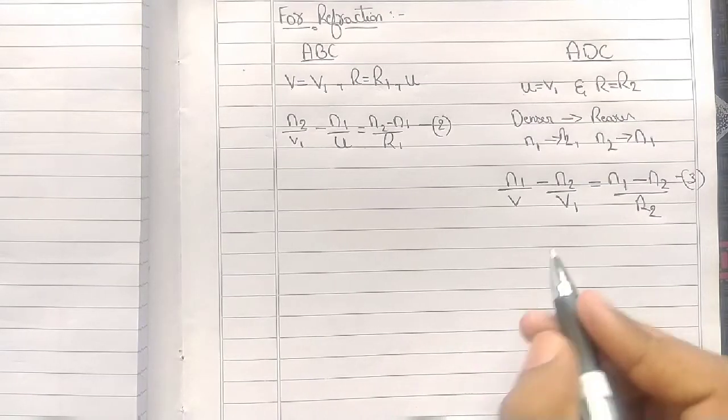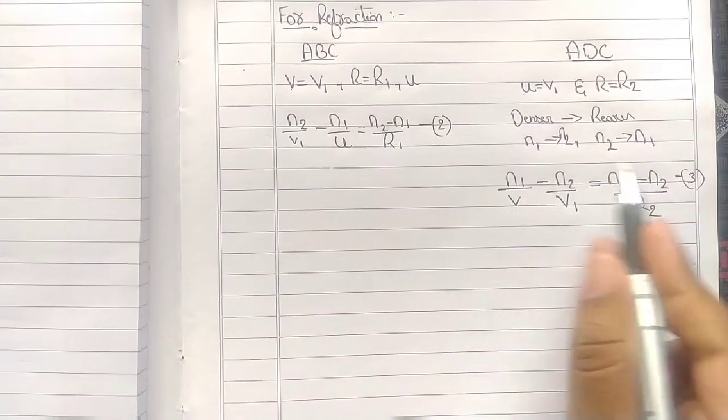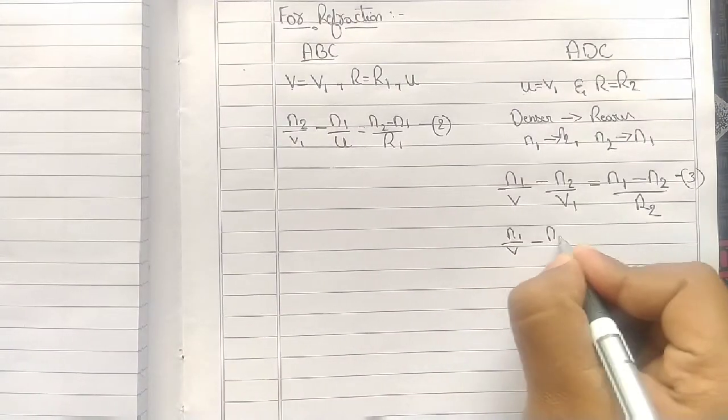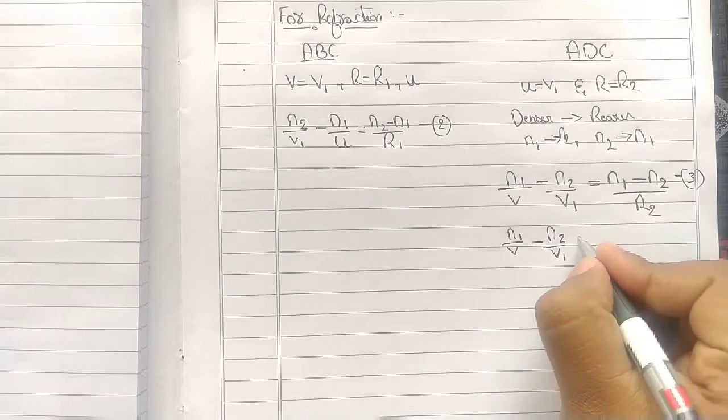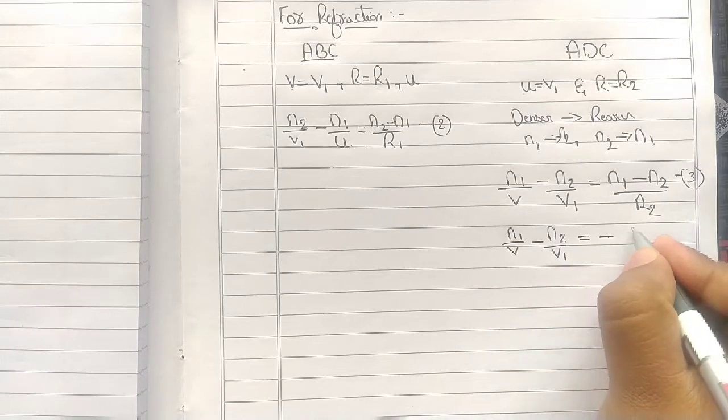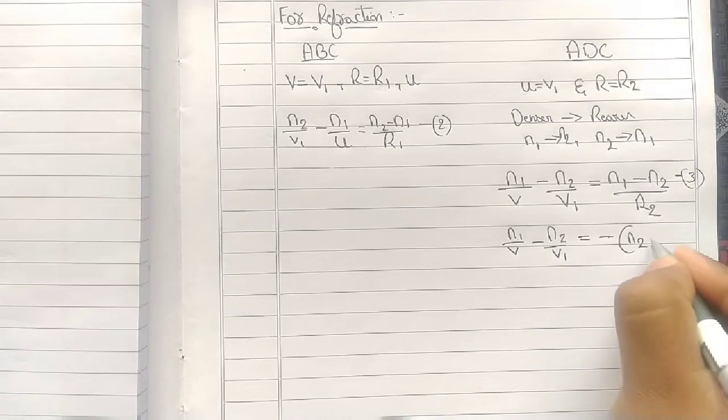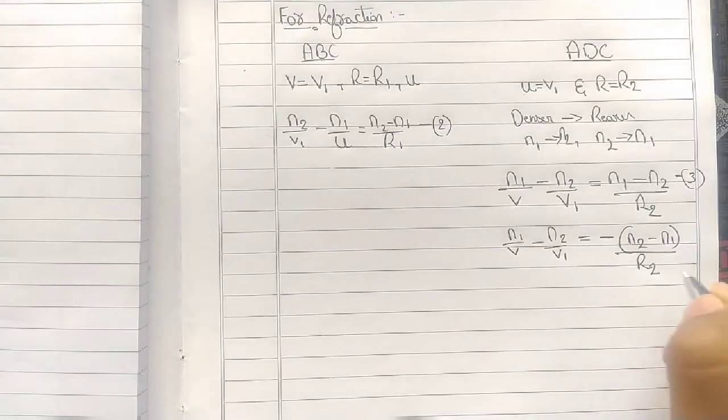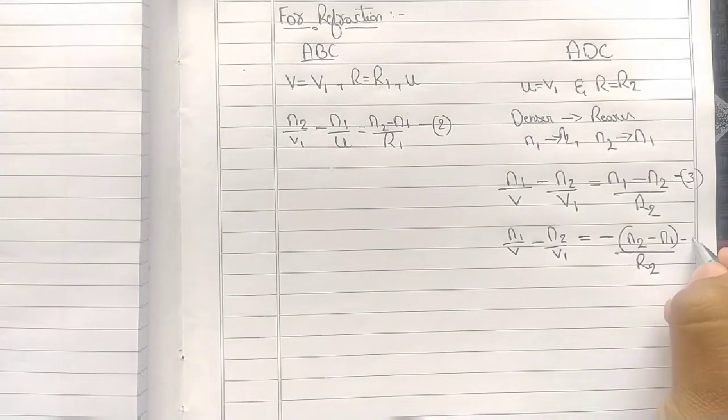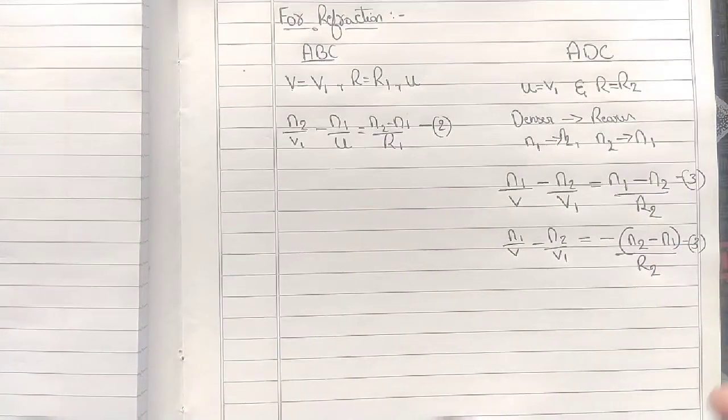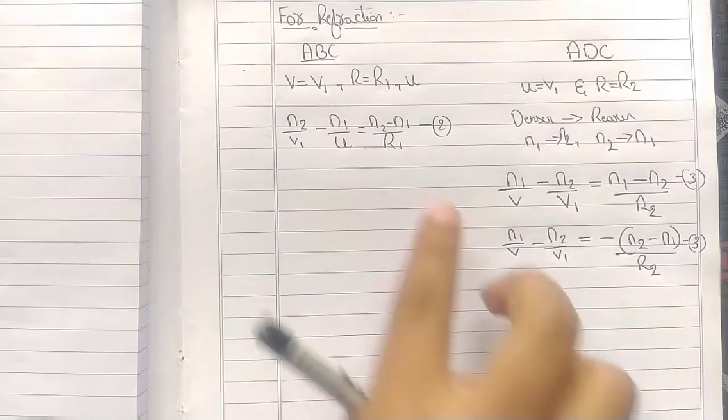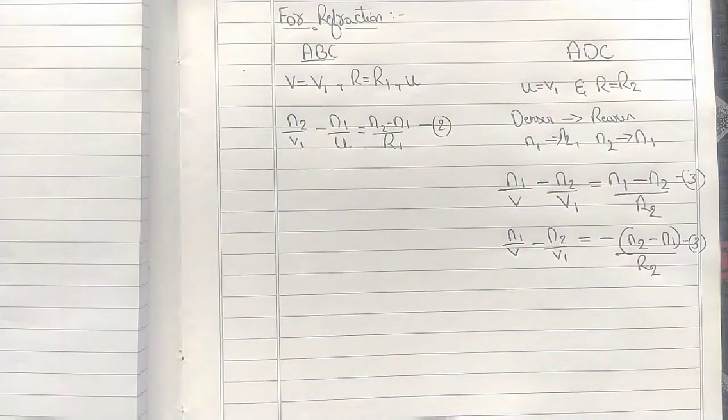Moving further, there is a small modification required in equation 3. N1 by V minus N2 by V1 equals, take negative common, so N2 minus N1 by R2. This is the same as equation 3 but we took negative from outside.